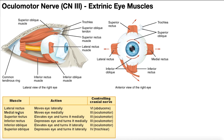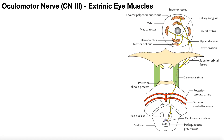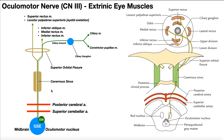But these are the four extrinsic eye muscles innervated by the oculomotor nerve. So now let's talk about the pathway of the oculomotor nerve. Remember, down at the bottom is the midbrain — you can see the periaqueductal gray matter, the red nucleus. The origin of the oculomotor nerve is the midbrain.